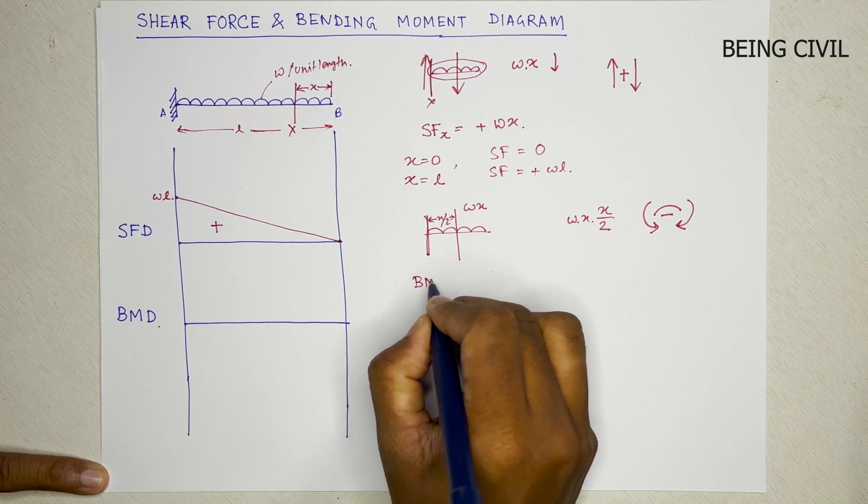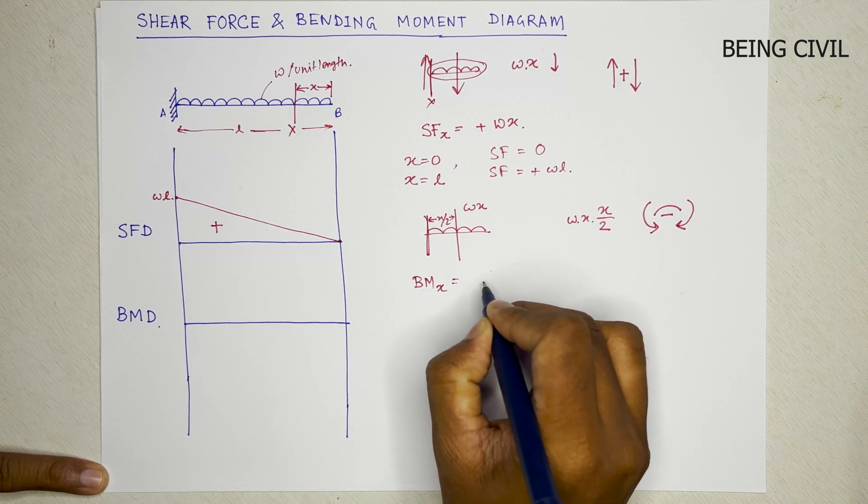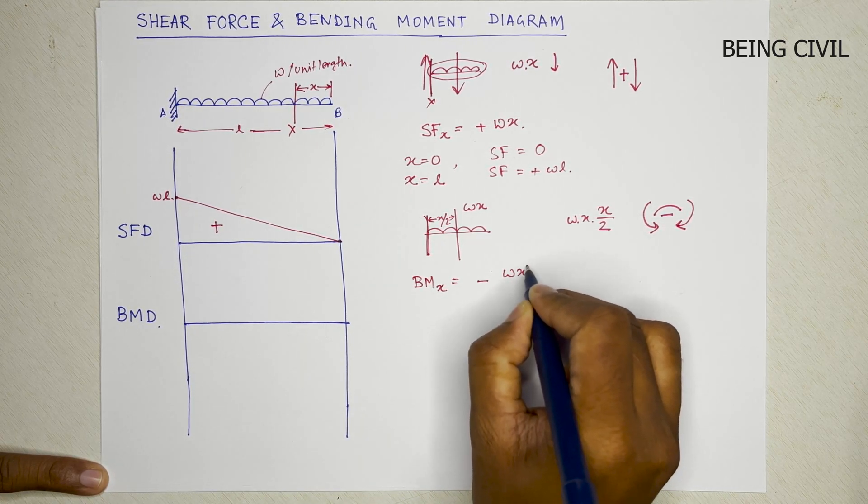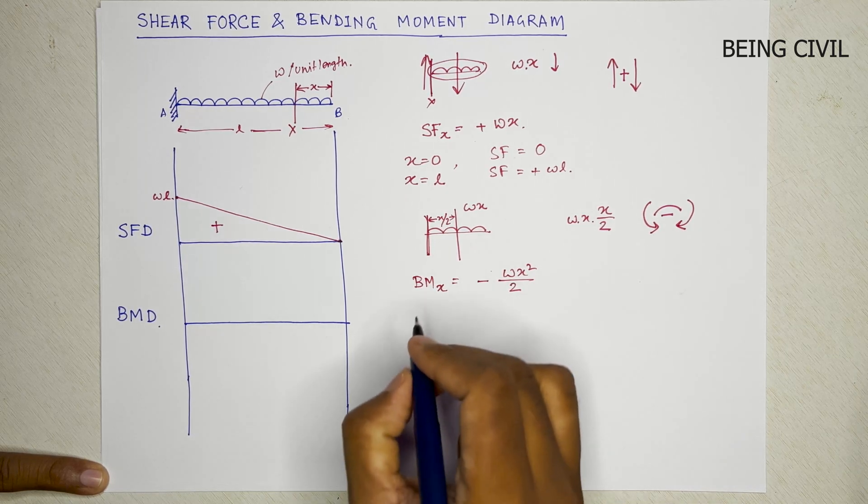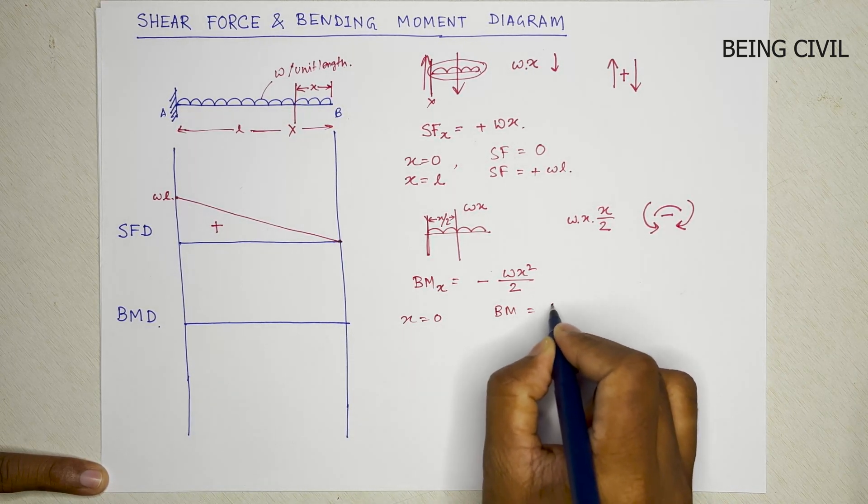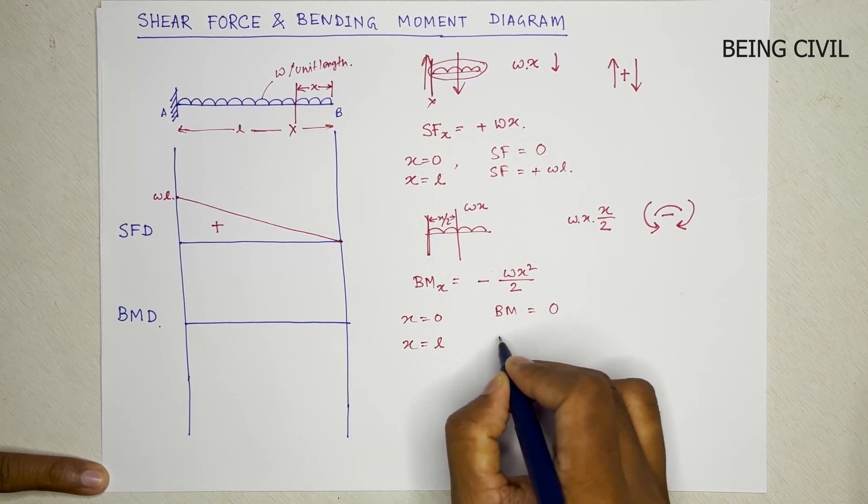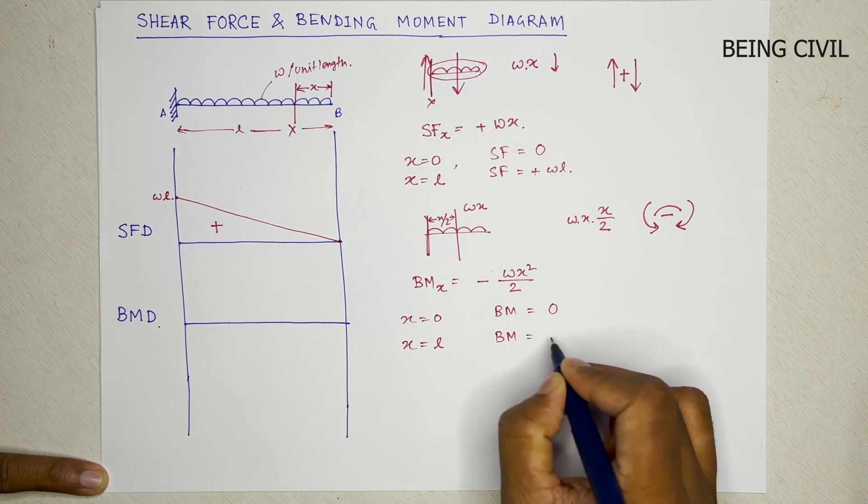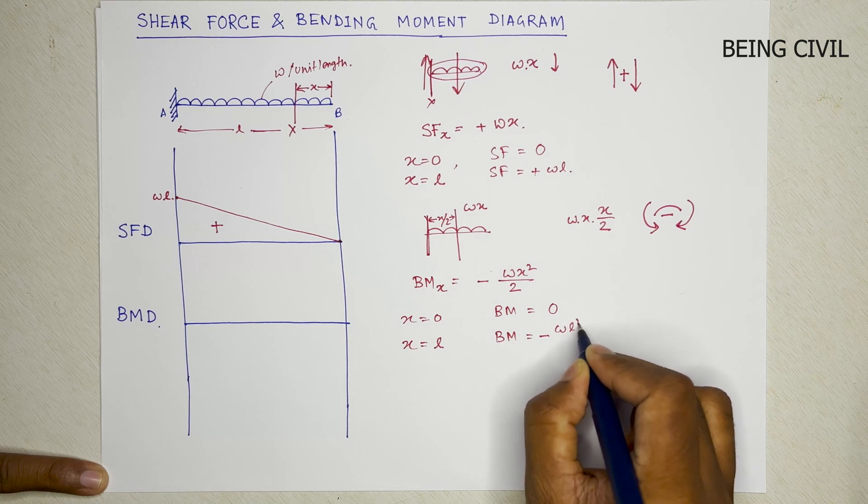So the bending moment at x is negative wx squared by 2. At x equal to zero, bending moment equals zero, and at x equal to L, bending moment will be minus wL squared by 2.